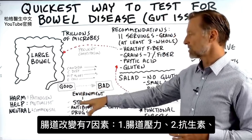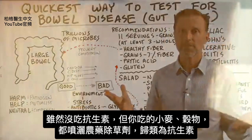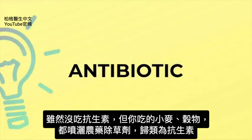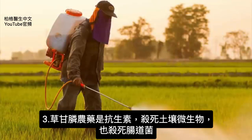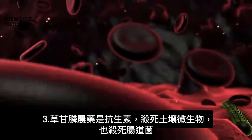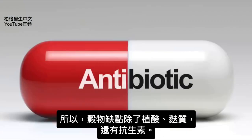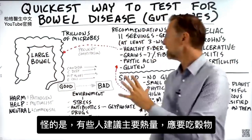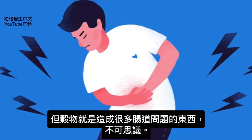When the environment changes — like there's stress in your gut — one stress would be antibiotics. You might say, well, I don't take antibiotics. But did you realize that wheat, that grain, was sprayed with glyphosate, which is an herbicide classified as an antibiotic? The company that created it also got a patent with a different application. Glyphosate is an antibiotic — it kills microbes in the soil and it kills microbes in your gut. So we can add that to the list along with phytic acid and gluten. It's mind-blowing that they recommend the majority of your calories come from grains — the very thing that creates so many problems for your gut.